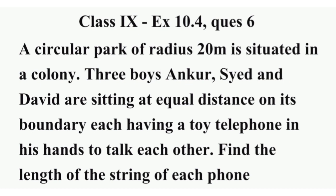Dekho, question ko dhyan se samjho. Ek colony hai. Us colony mein ek park hai jo circular shape ka hai. Ab woh jo circular shape ka park hai, uska radius 20 meter ka hai. Ab teen ladke hain — ek hai Ankur, doosra hai Sayyad, aur teesra hai David. Yeh teen log us circular park ke circle ke boundary mein baithe hain.